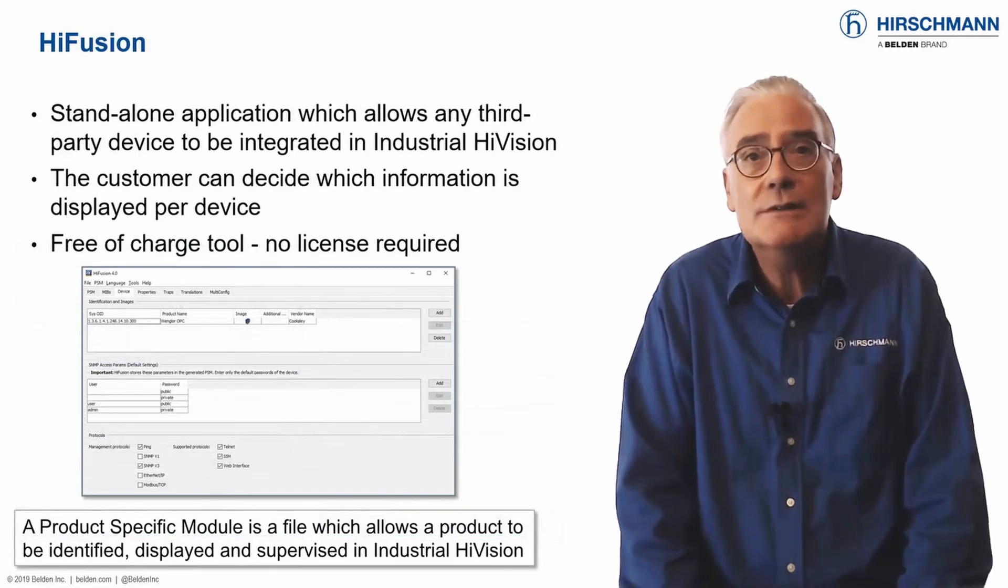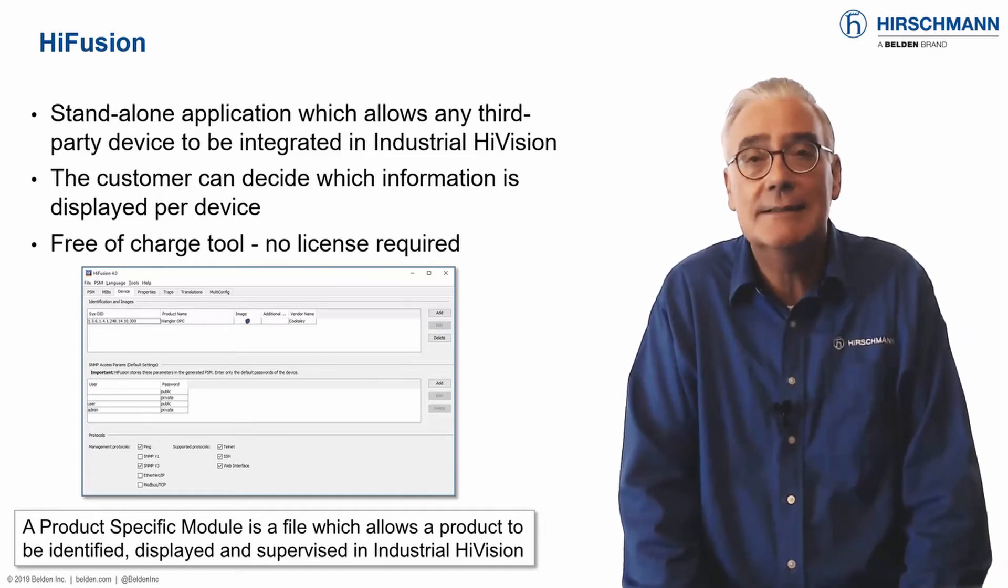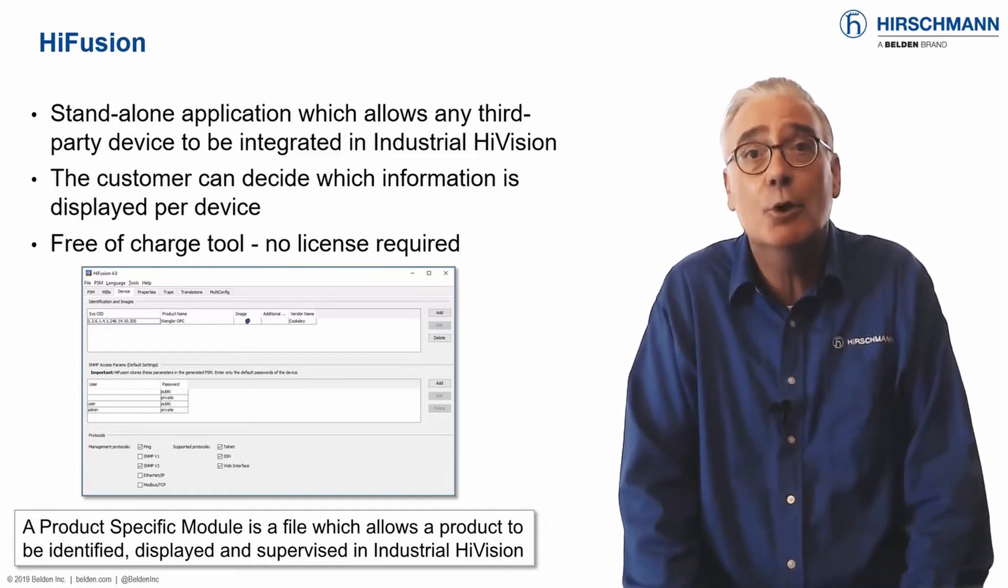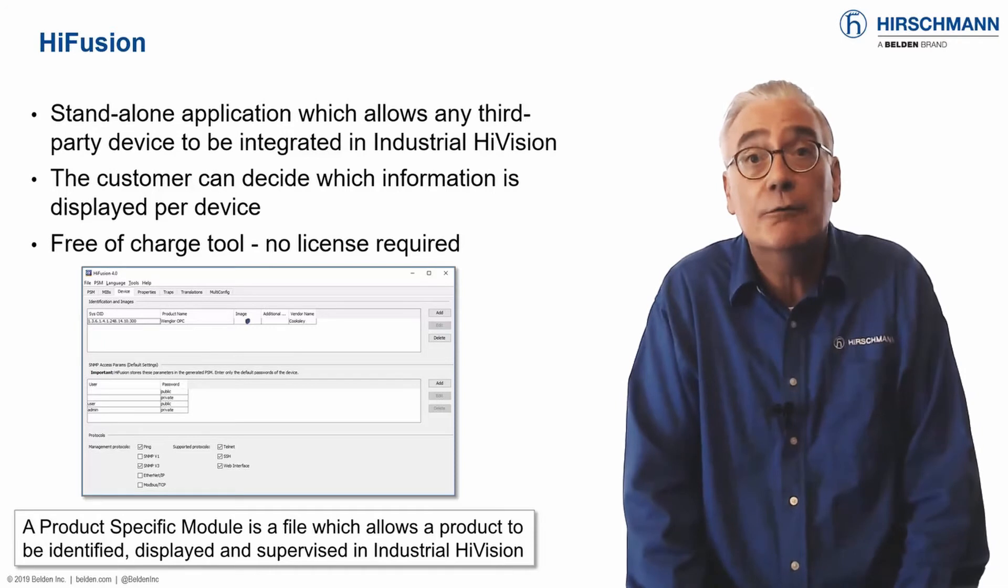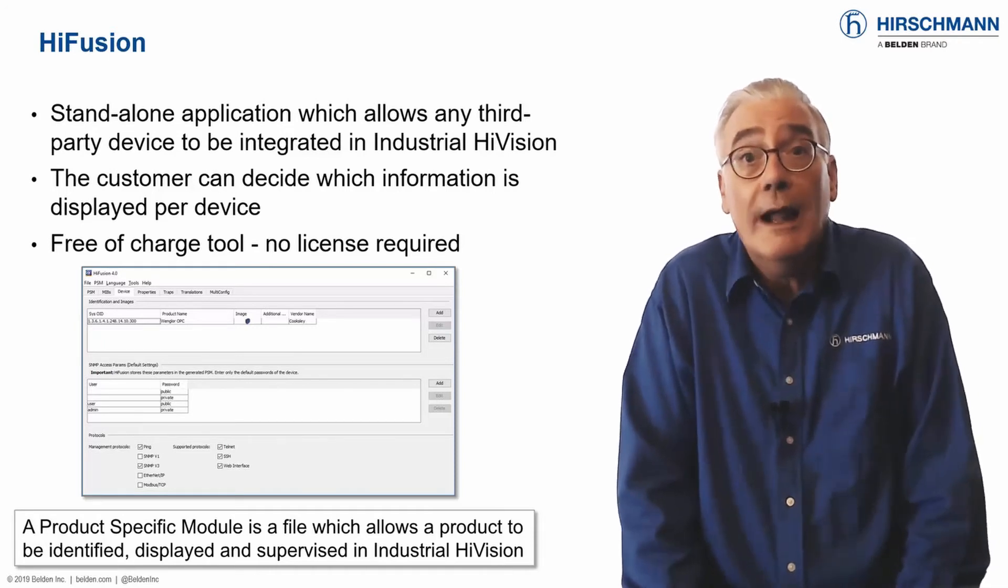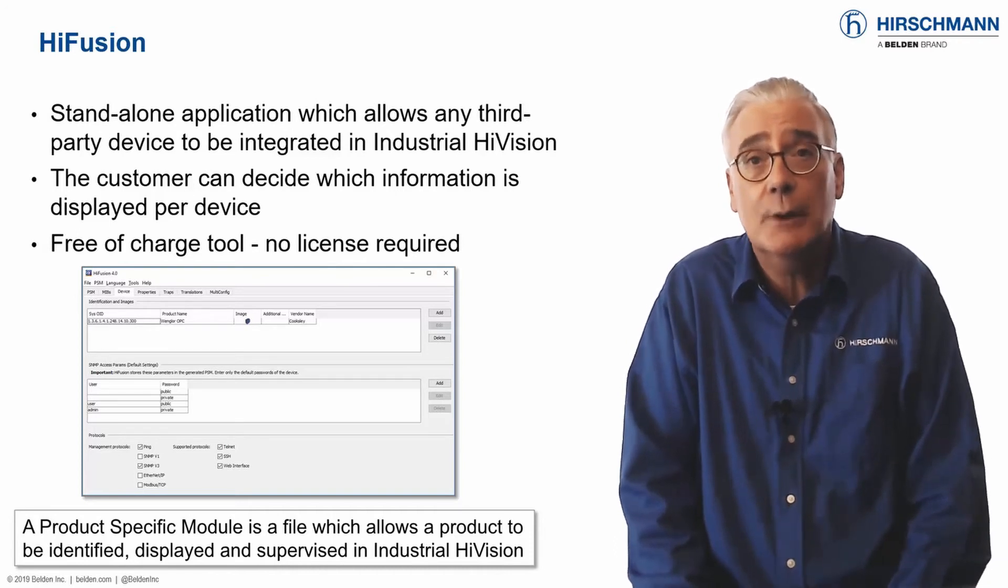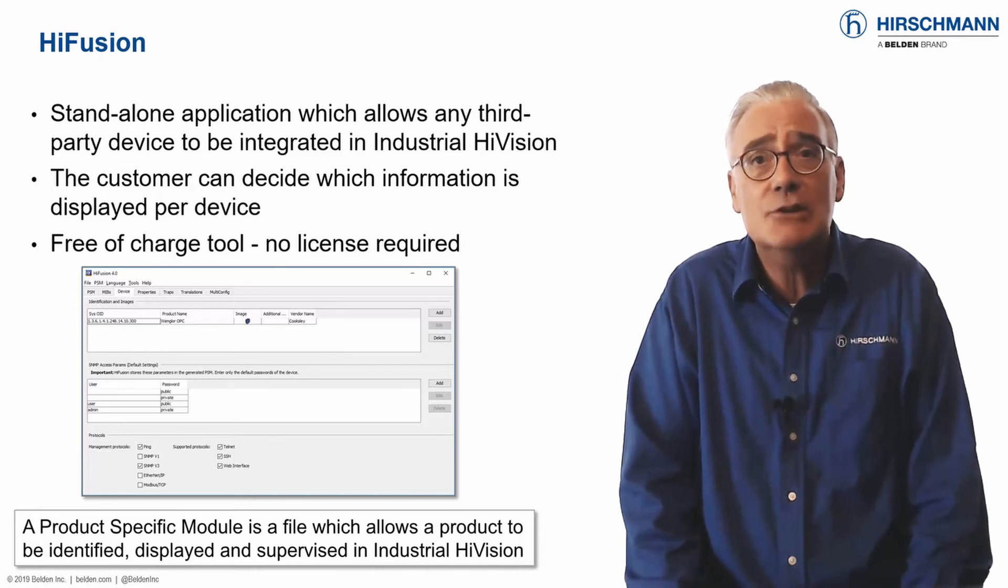Industrial HiVision was developed to configure and supervise Hirschmann network devices. But modern OT networks increasingly support equipment from many manufacturers. This can include network infrastructure equipment from other well-known vendors, or end devices which do not have their own supervision software. In any case, Industrial HiVision can meet the challenges of a mixed environment.